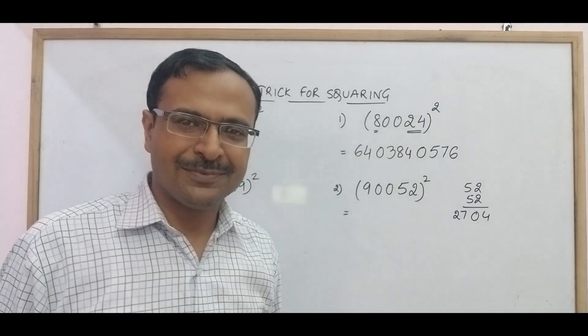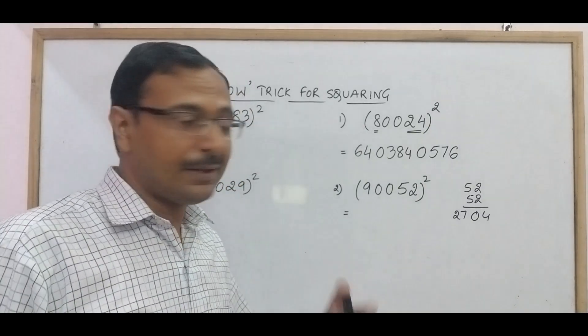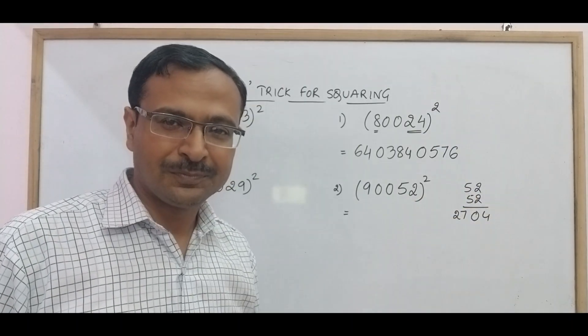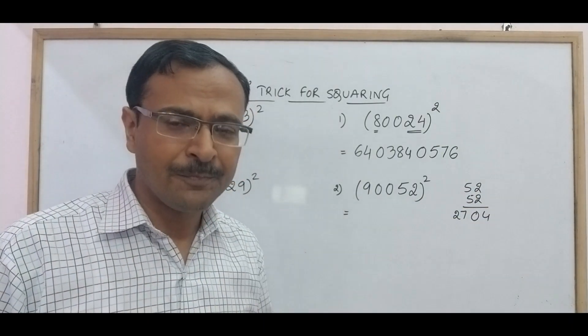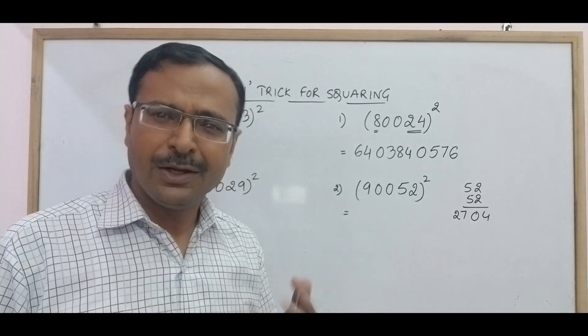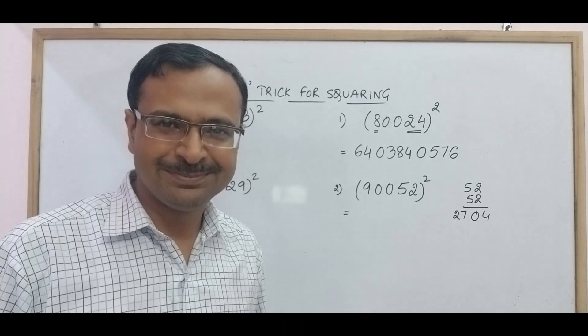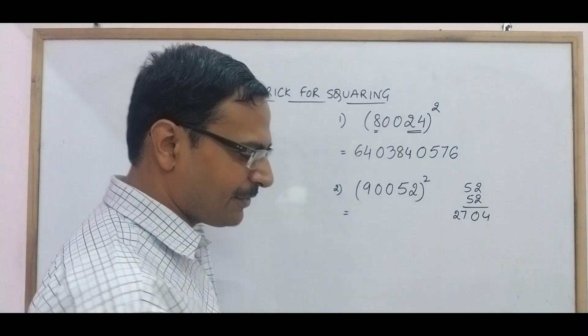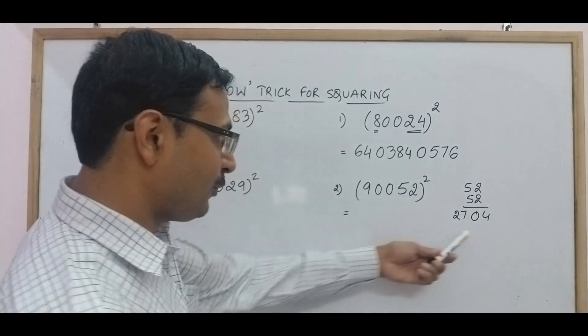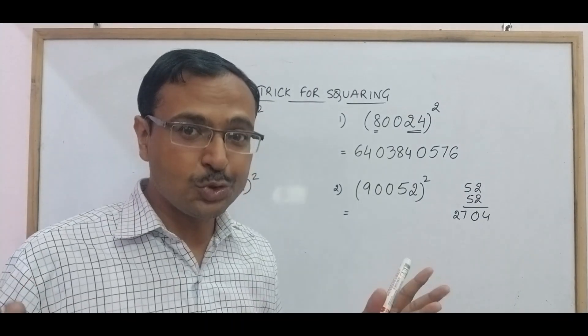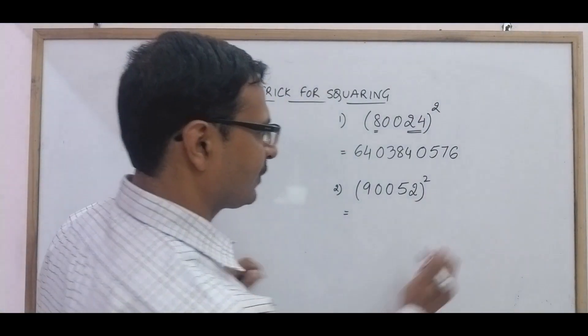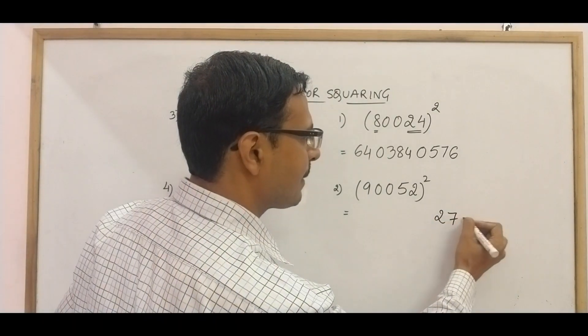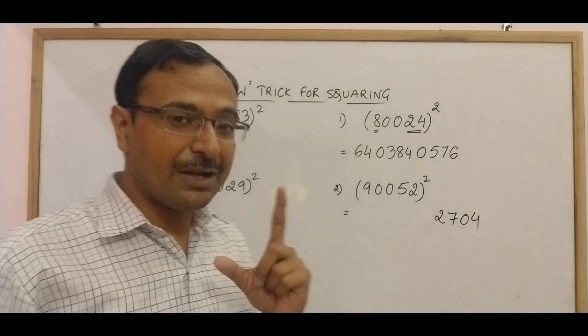You can do that orally without even writing them on one side. Just practice the multiplication tricks which I have posted on the channel and I am sure you are going to multiply two digit numbers in a flash. So 2704 is the first number which I required. Now it is a four digit number. So I don't need to prefix any zeros here. So 2704 will be my last four digits of the answer.